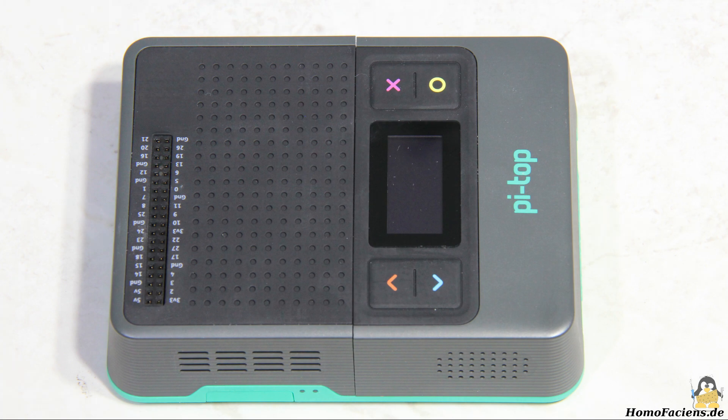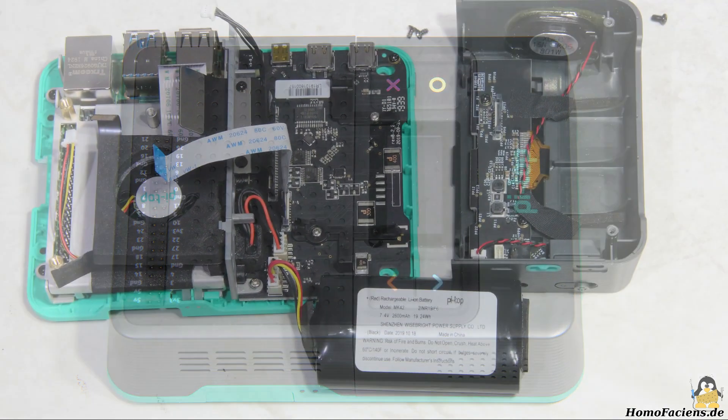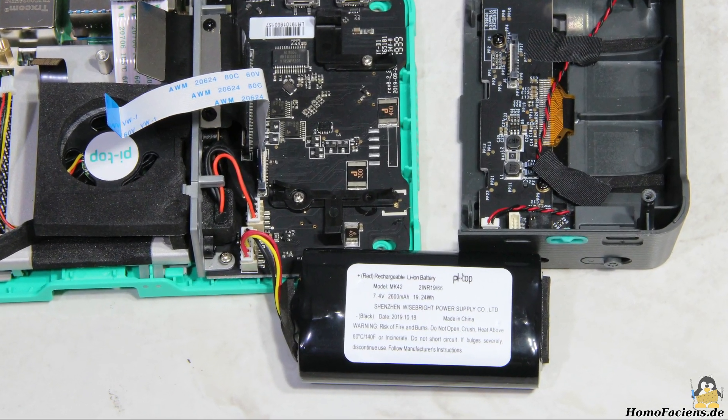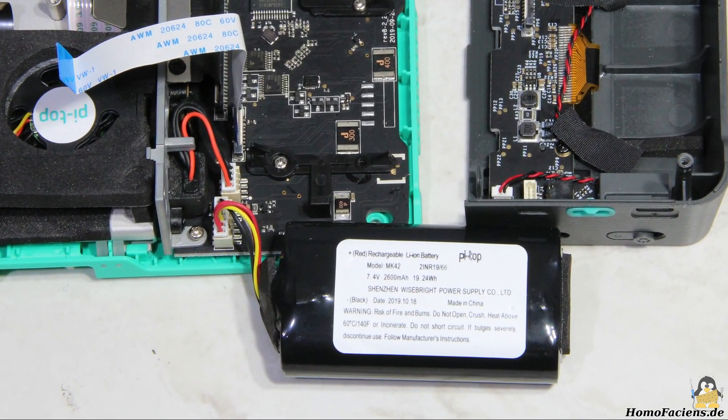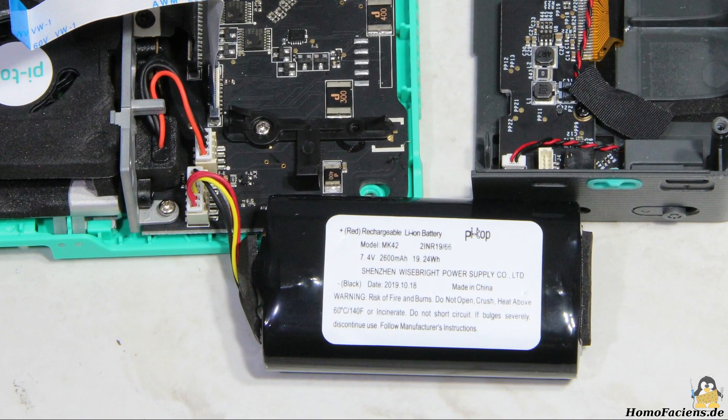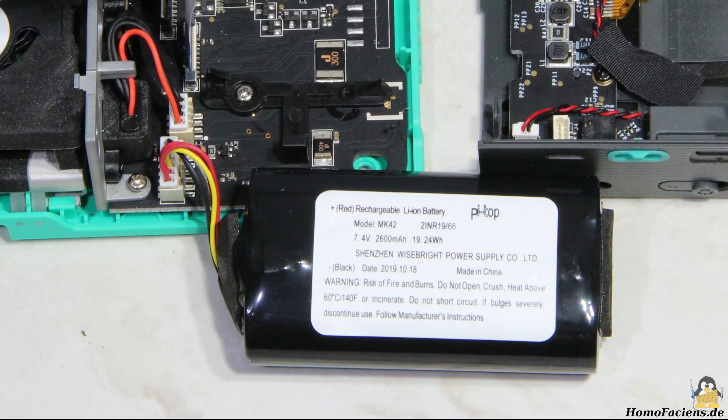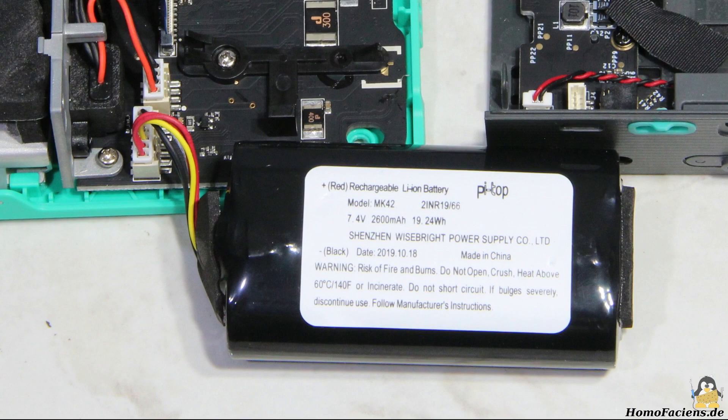What are the advantages of a Pi-Top 4 for a rover project? First of all I would like to mention the integrated battery. The electronics in the Pi-Top ensure that the Raspberry Pi shuts down when the battery is low, which prevents deep discharge.